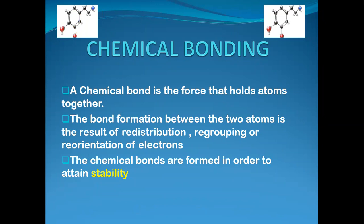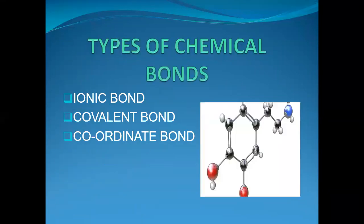A chemical bond is the force that holds atoms together — there is a force which holds two different atoms together. The bond formation between atoms is mainly the result of redistribution, grouping, and reorientation of electrons, meaning only electrons are involved in chemical bonding. The whole chemical bonding phenomenon is the cause to attain stability. There are mainly three types of chemical bonding: ionic bond, covalent bond, and coordinate bond.